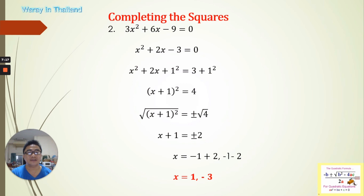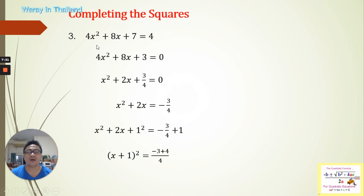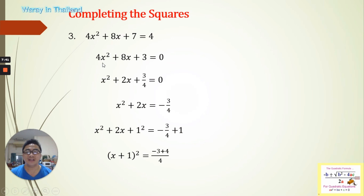Now we go to our last example. Number 3: 4x² + 8x + 7 = 4. This is already close to standard form, but we need to combine the two constants: 7 and 4. We can transpose 4 to the left side — it becomes negative — so 7 minus 4 is 3. Now we check the leading coefficient, which is 4, so we cannot start completing the square yet. We divide the whole equation by 4 so the leading coefficient will be eliminated. This gives us x² + 2x + 3/4 = 0.